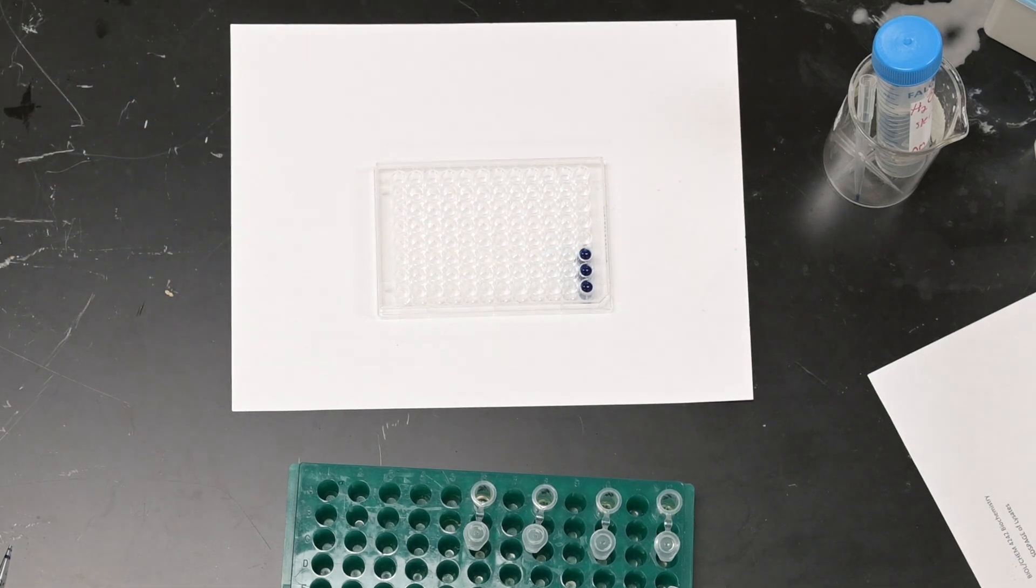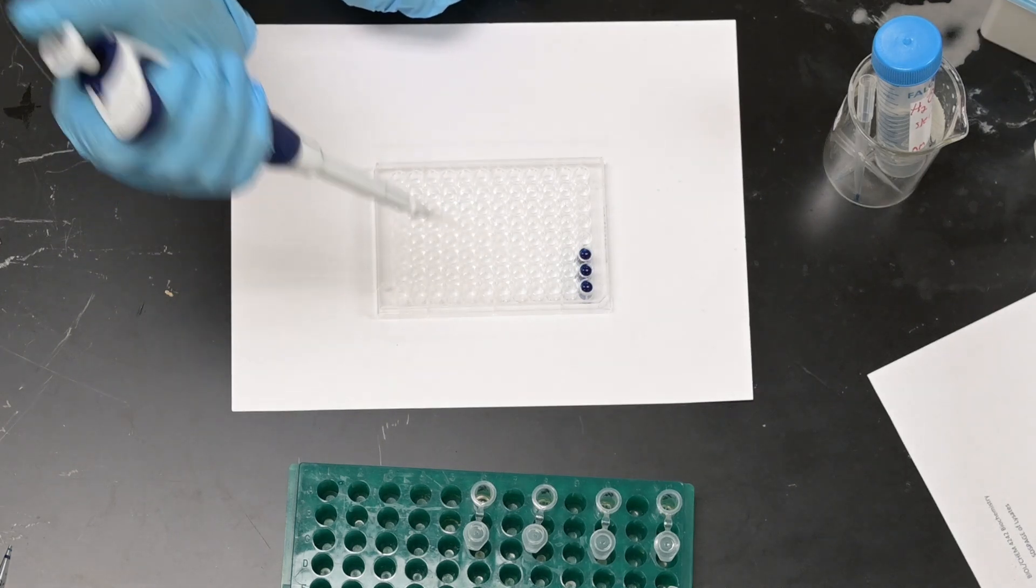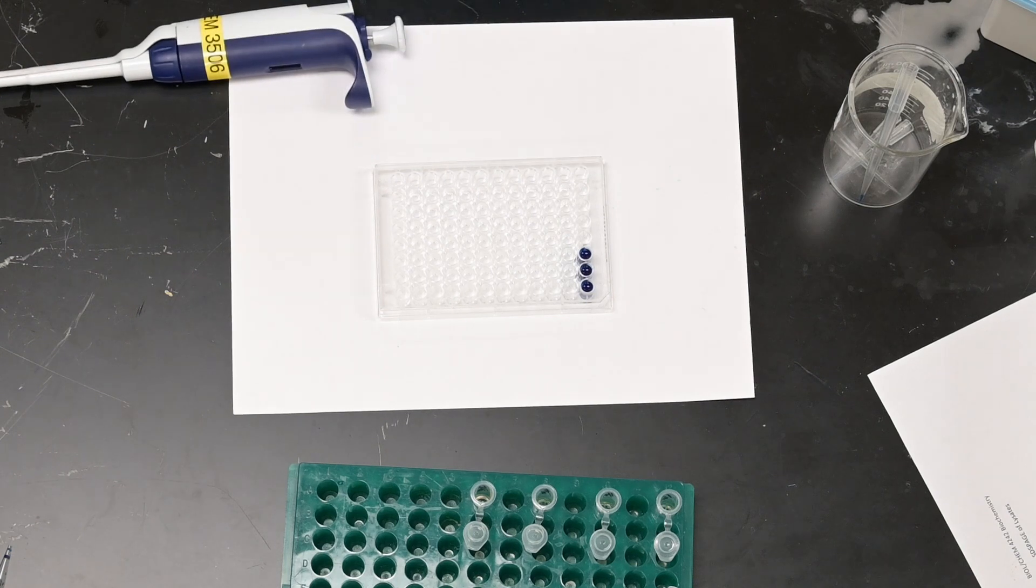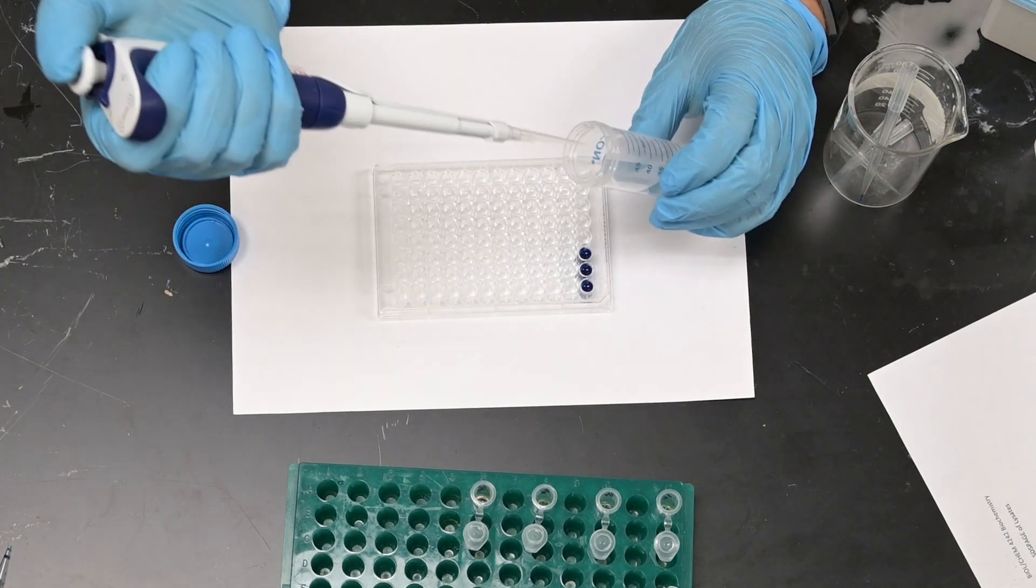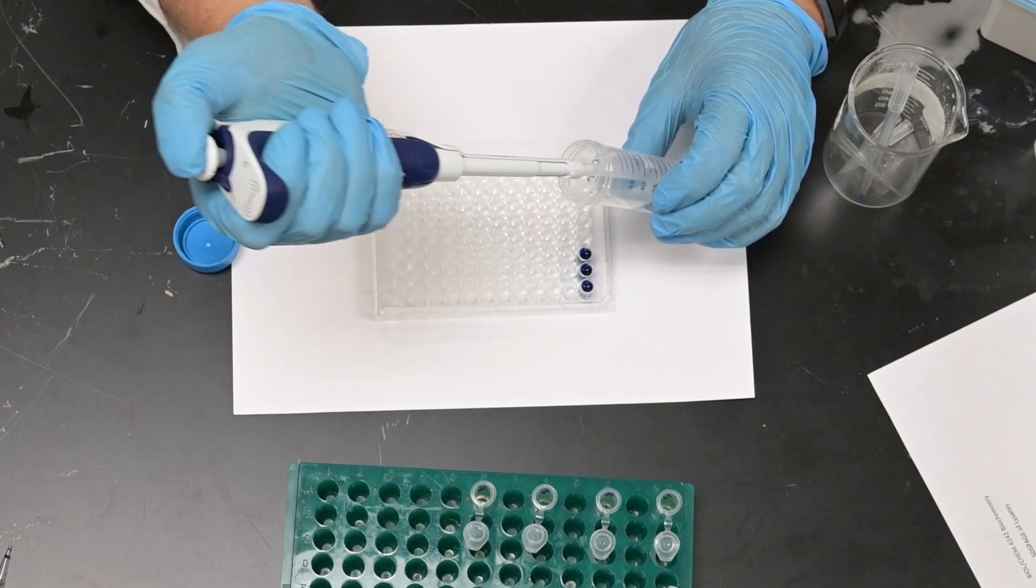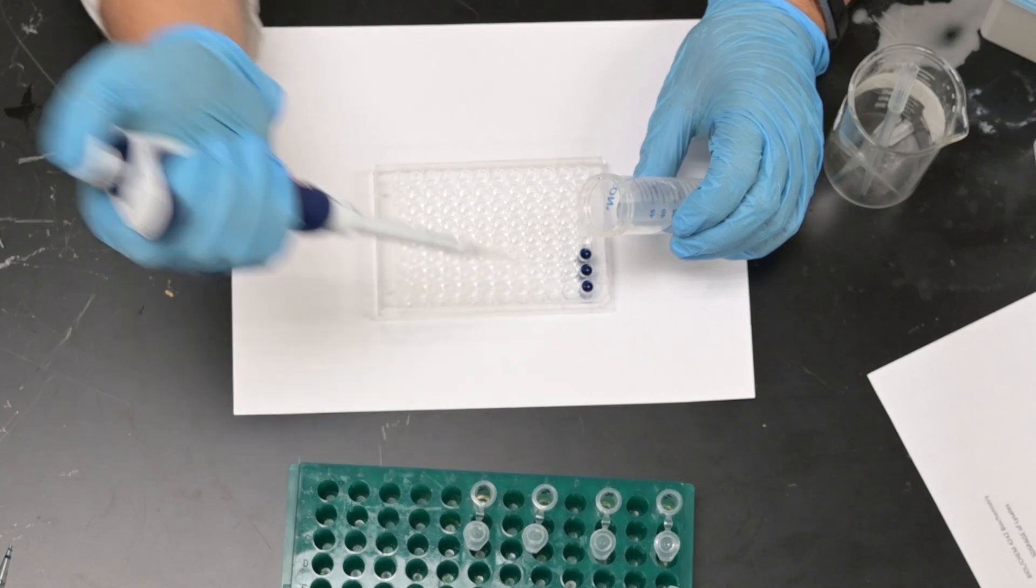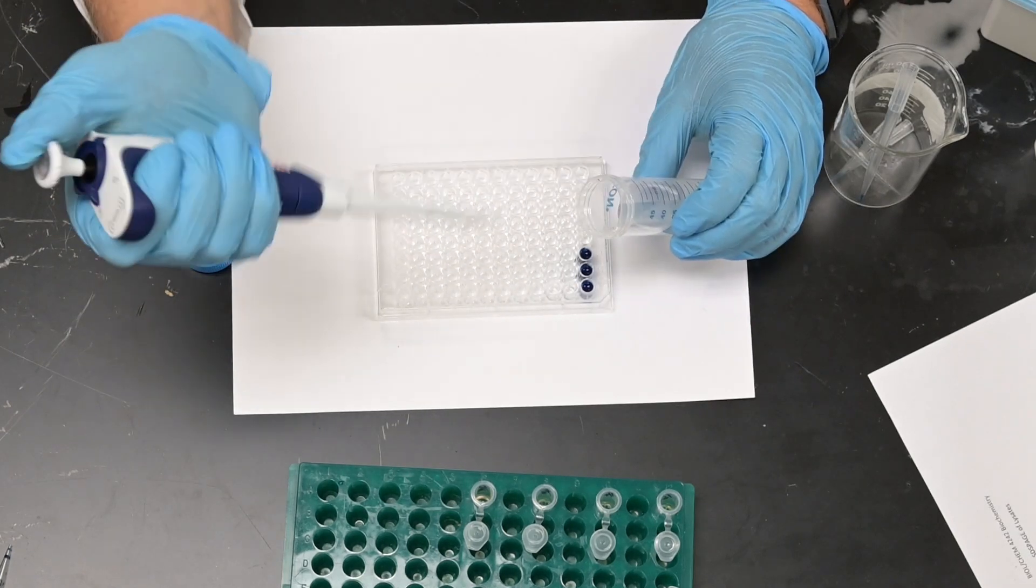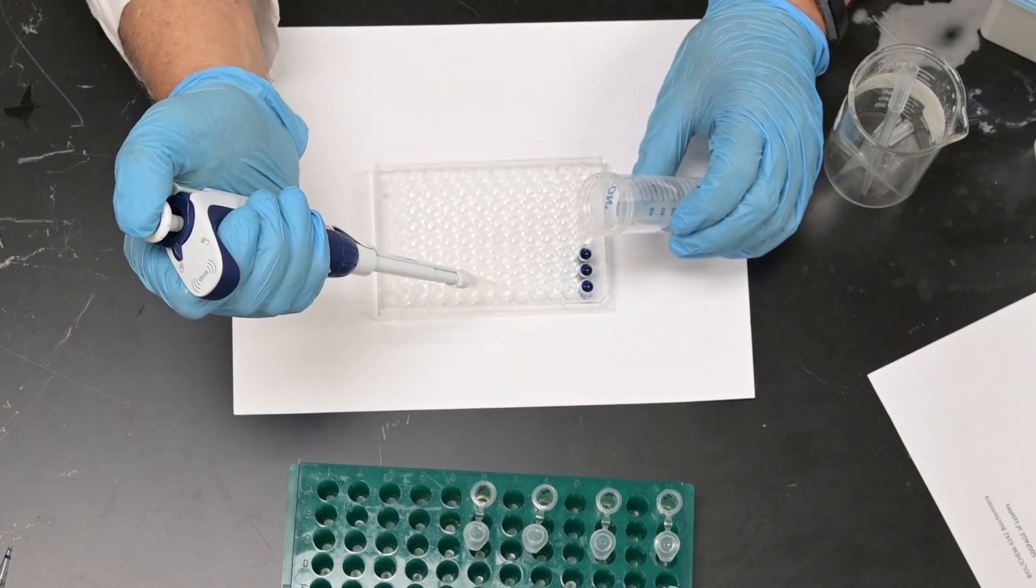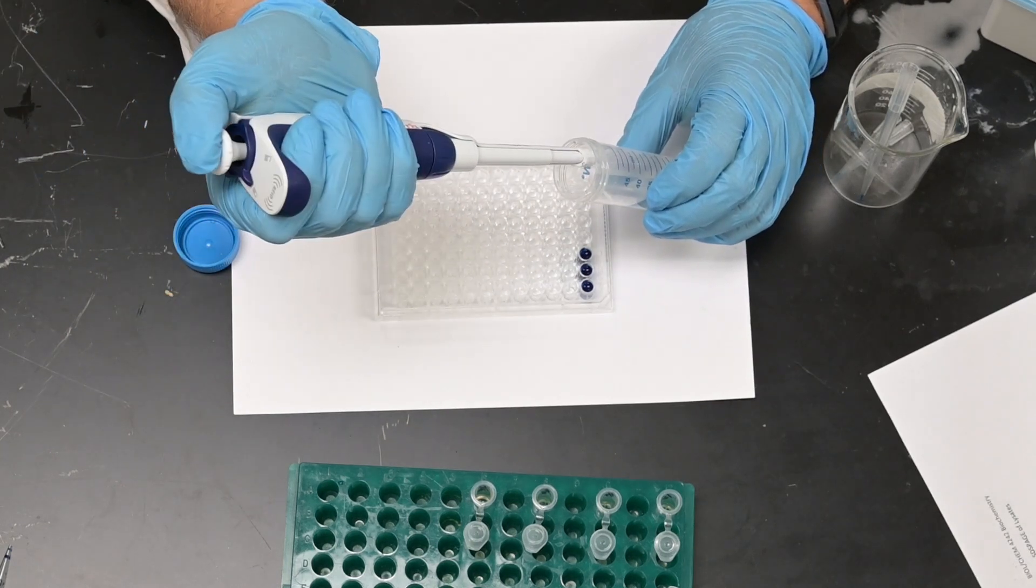The next step is we're going to add 150 microliters of water in each of these because that'll make it a twofold serial dilution. Get the water here and I'll put 150 microliters in A2, A3, A4, and A5, and we'll do that for B as well, B2, B3, B4, and B5.